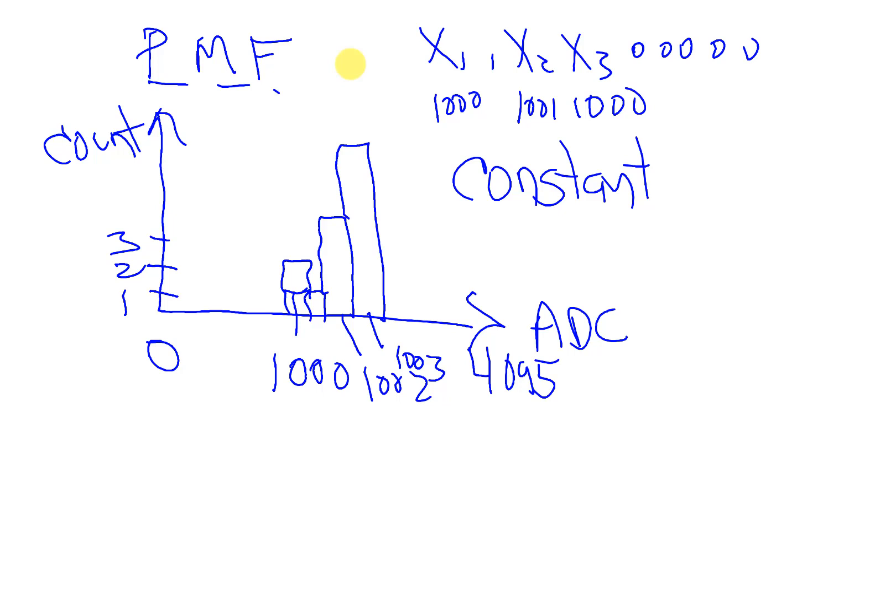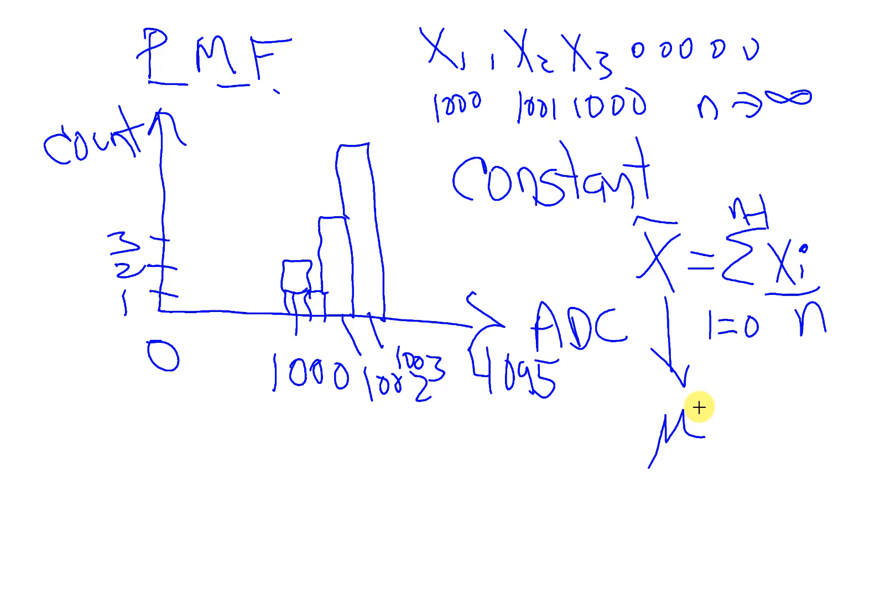And again, the probability mass function, the central limit is going to say, as I take more samples, this average, as I average, i equals 0 to n minus 1, as I take this average, as n goes to infinity, larger and larger, this average will approach the true average, and we'll see something awesome in the demo. So let me go over to the demo.